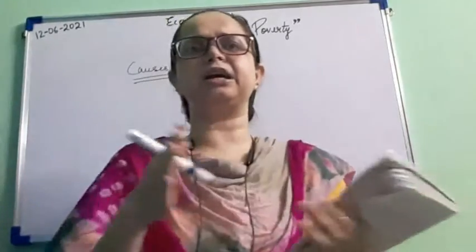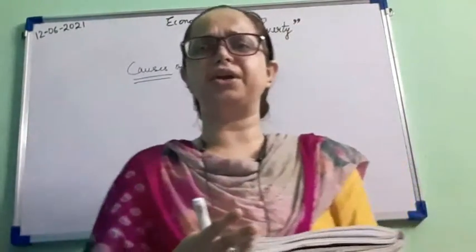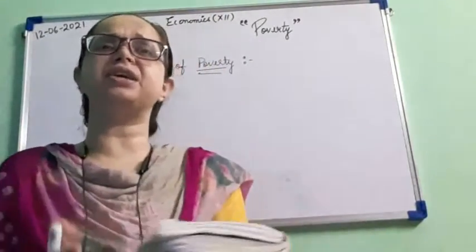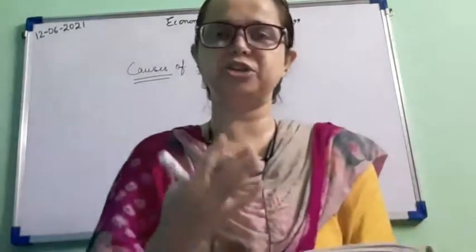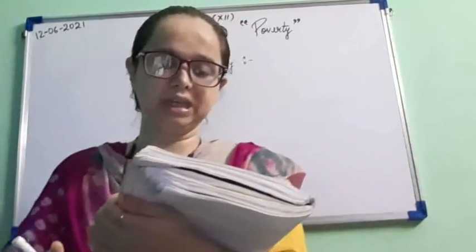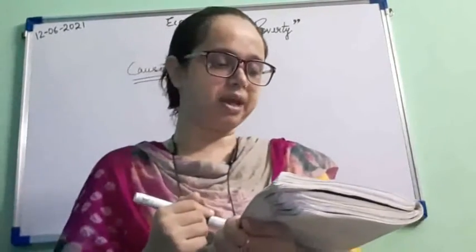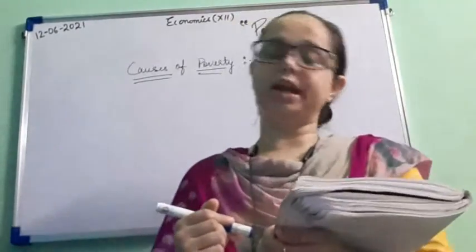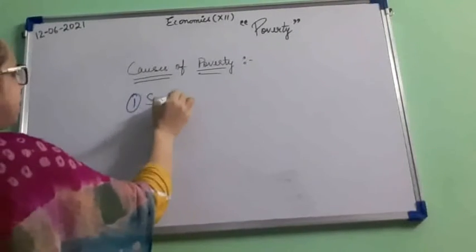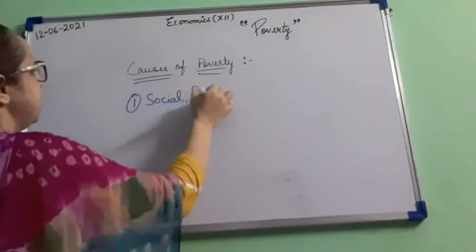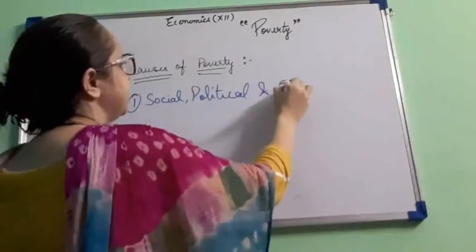The poor are the main victims of caste-based discrimination and other religious and discriminatory practices. There are many religious and social contradictions. The population of the poor is also increasing. These result in social, political and economic inequality — which is the first major cause of poverty.